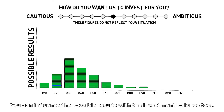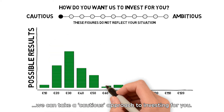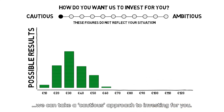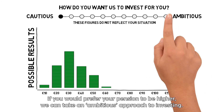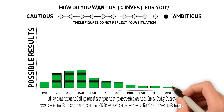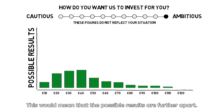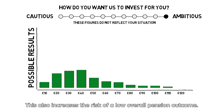You can influence the possible results with the Investment Balance Tool. If you want more certainty concerning a specific result, we can take a cautious approach to investing for you. If you would prefer your pension to be higher, we can take an ambitious approach to investing. This would mean that the possible results are further apart, but it also increases the risk of a low overall pension outcome.